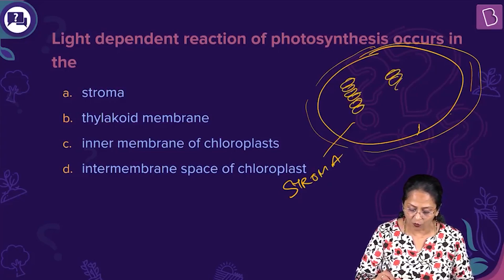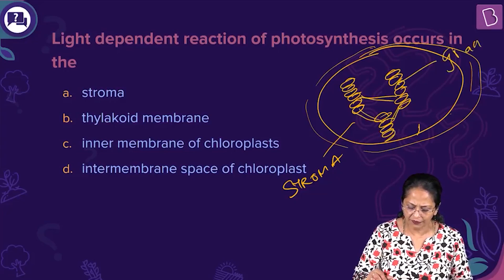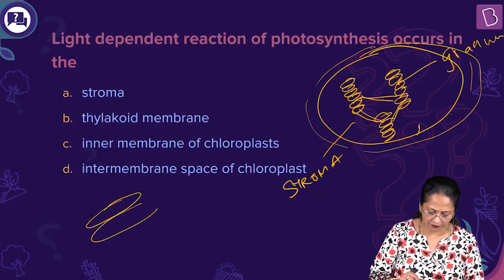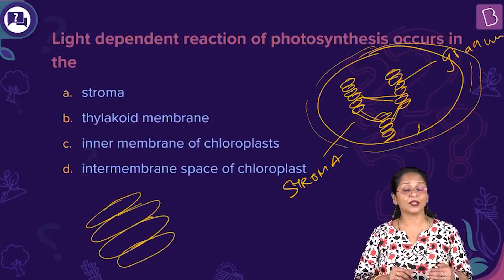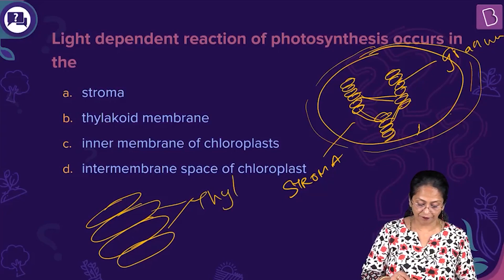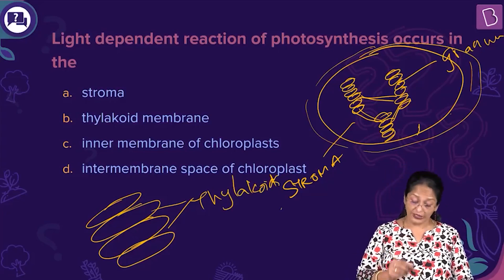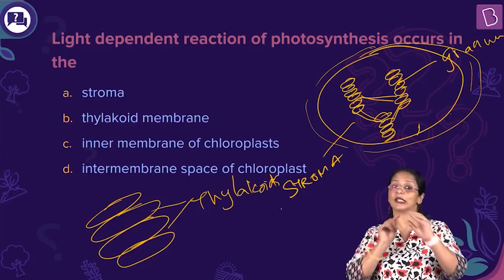What is a granum? Granum is nothing but stacks of coin-like structures stacked one on top of the other. These grana are interconnected by the stromal lamellae or the fret membrane. Each thylakoid has a space called the lumen. The light-dependent reaction takes place in the thylakoids. Why? Because this is where you find the photosynthetic pigments such as chlorophyll A, chlorophyll B, xanthophylls, and carotenoids.